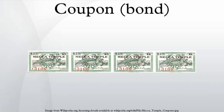The origin of the term coupon is that bonds were historically issued in the form of bearer certificates. Physical possession of the certificate was proof of ownership. Several coupons, one for each scheduled interest payment over the life of the bond, were printed on the certificate. At the date the coupon was due, the owner would detach the coupon and present it for payment.